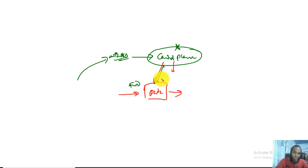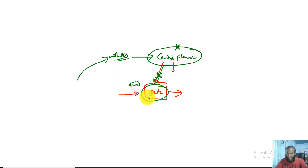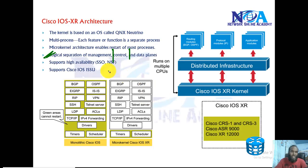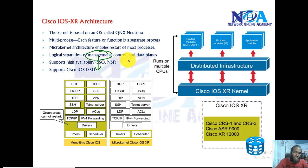If the routing table is not built or has an issue, it will impact packet forwarding. But in IOS XR, these planes are totally separated, so any issue with one plane will not impact the other planes. Logically, inside the architecture, they are completely separated, unlike traditional IOS versions.